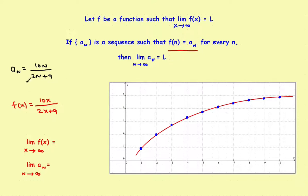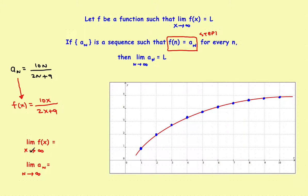This leads to a three-step process. Step one: change the sequence into a function. That's why on many of these problems, the very first thing you do is change a_sub_n into f(x). The reason is that you have established rules you can use to find the limit of a function, but not directly for a sequence. So you've changed it from a sequence problem into a function problem.